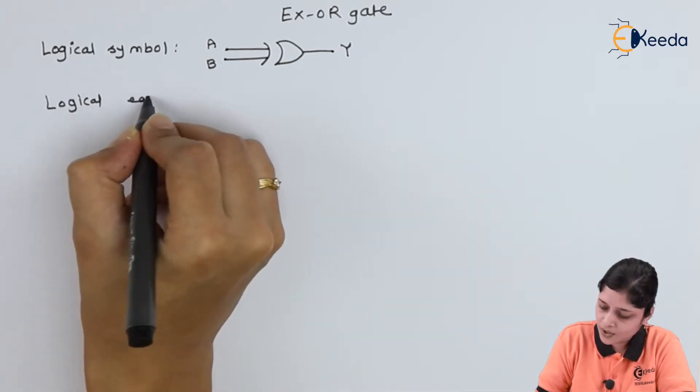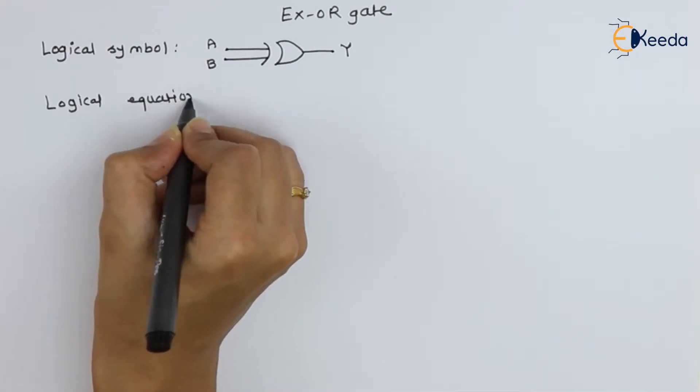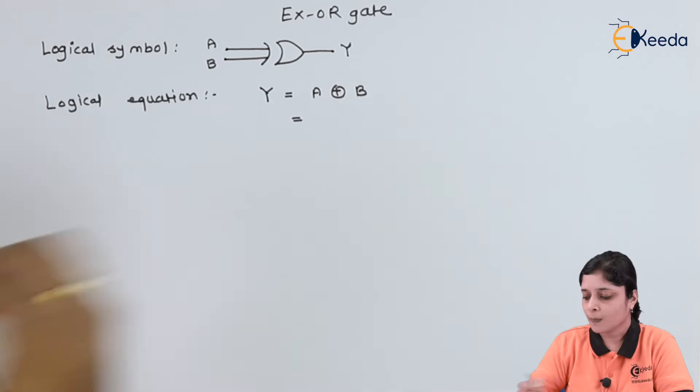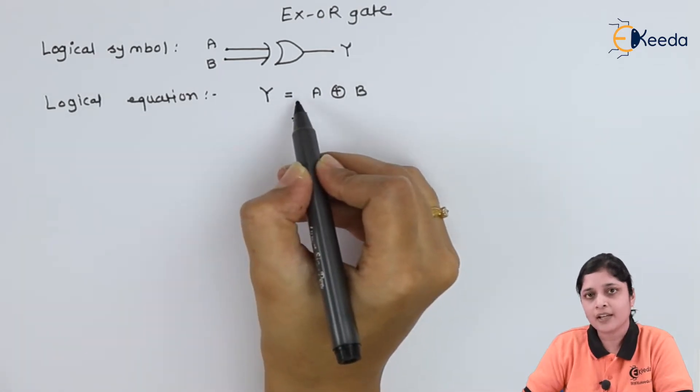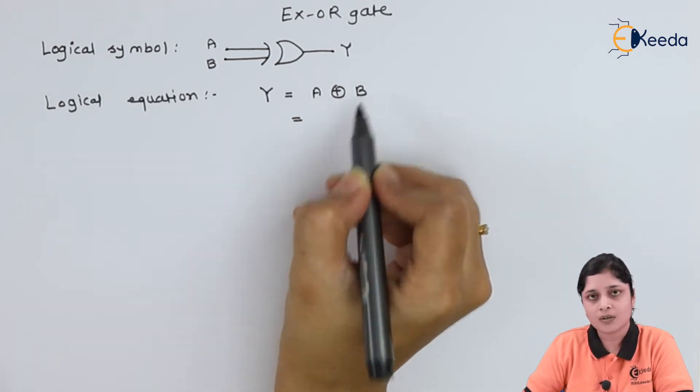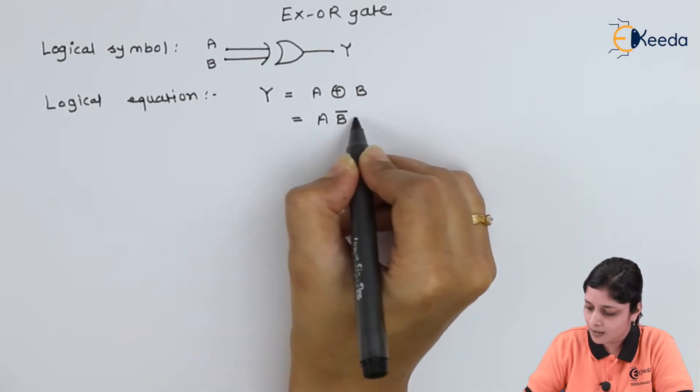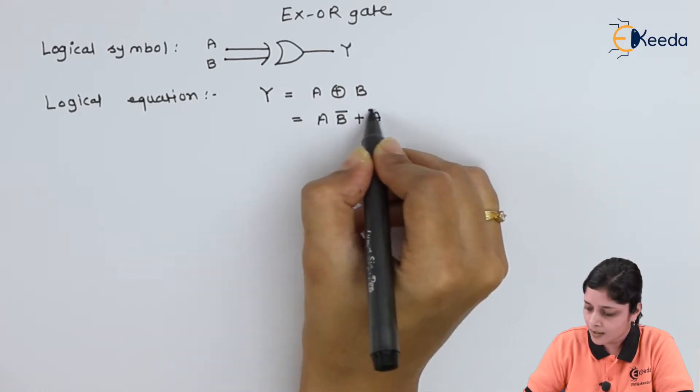Logical equation. You can write here Y equals to A XOR B. Also, you can expand A B bar plus A bar B.